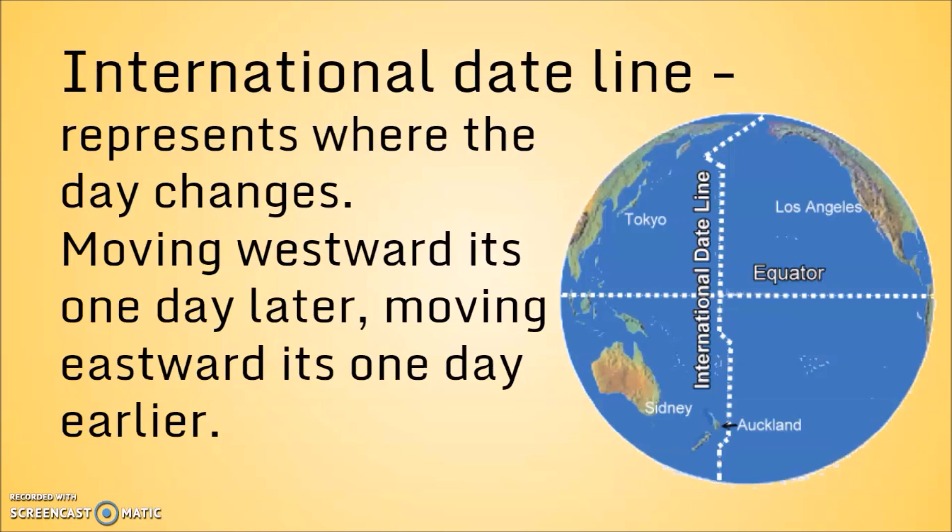The international dateline represents where the day changes. If you're going westward of the international dateline, you move one day later, and going eastward, it's one day earlier.